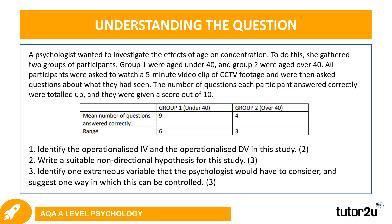There is some information about the mean number of questions answered correctly and the range, but those aren't really important for the three questions available. Question one asks you to identify the operationalized IV and the operationalized DV in this study. Question two wants you to write a suitable non-directional hypothesis. Question three asks you to identify one extraneous variable the psychologist would have to consider and suggest one way it can be controlled. Pause the video now and have a go.